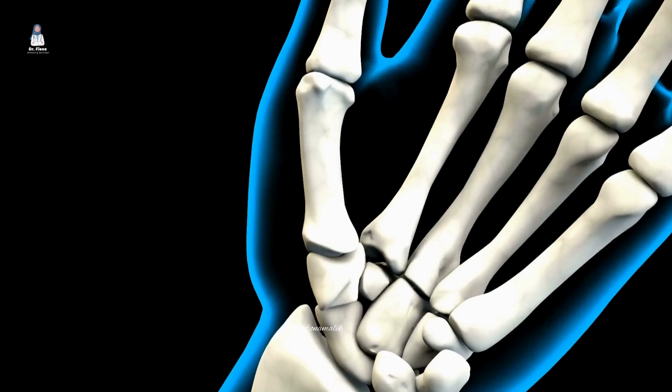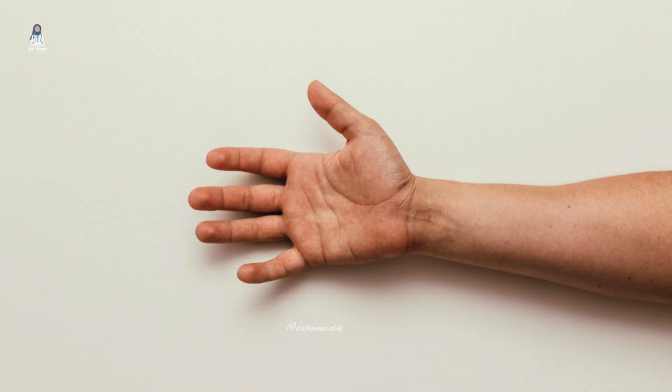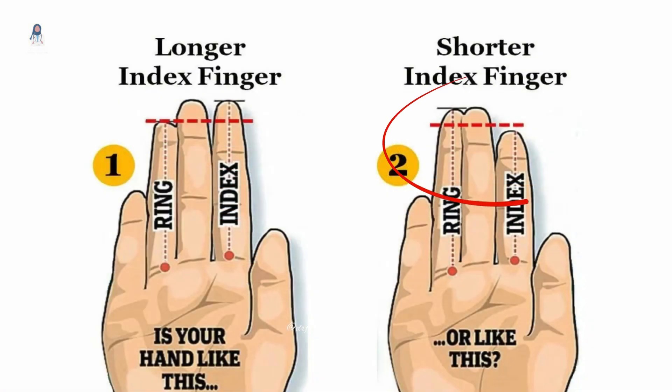Now, take a moment to look at your right hand and focus on the length of your index and ring fingers. What do you see? Is your index finger shorter than your ring finger, or are they equal in length, or is it longer?